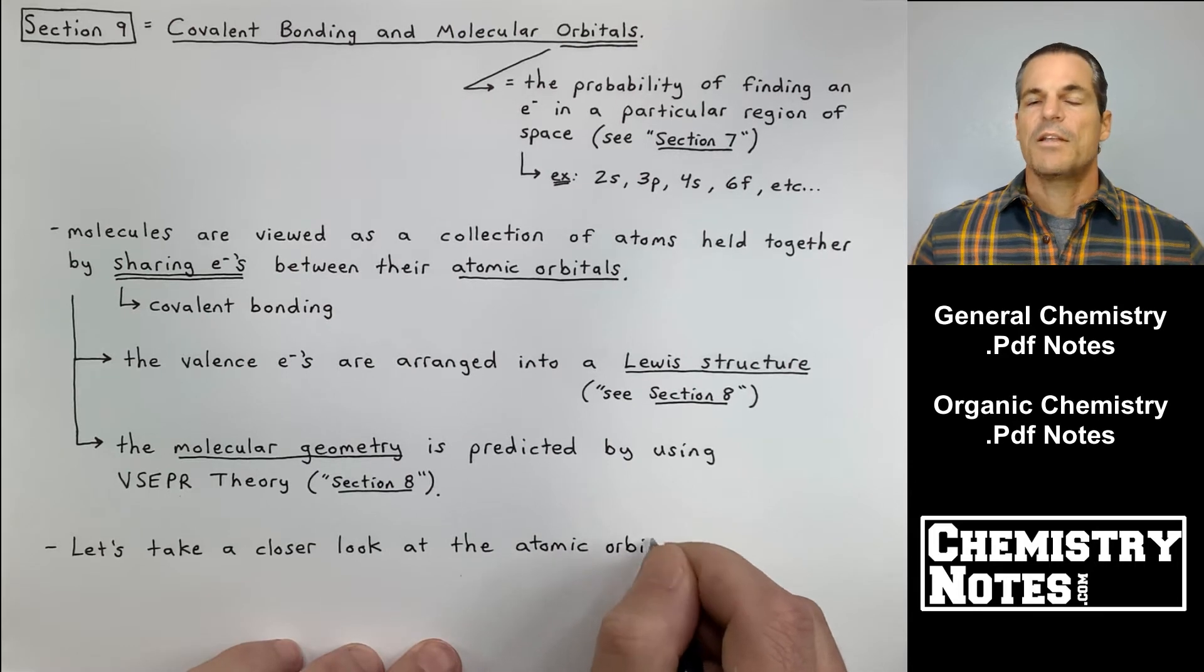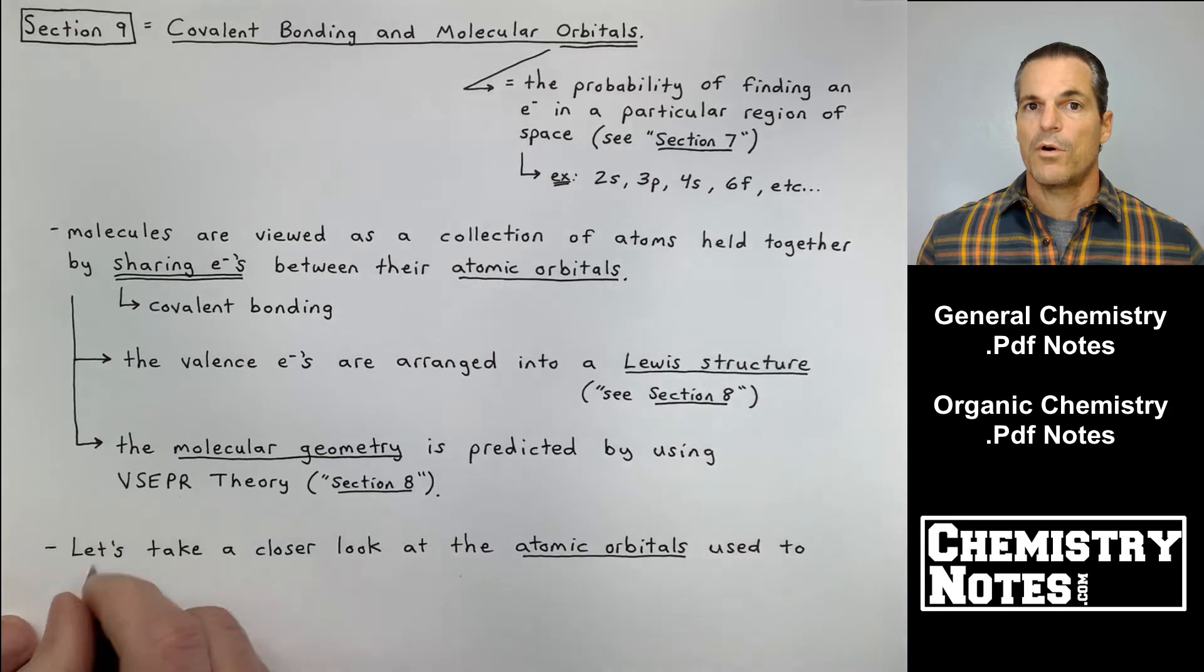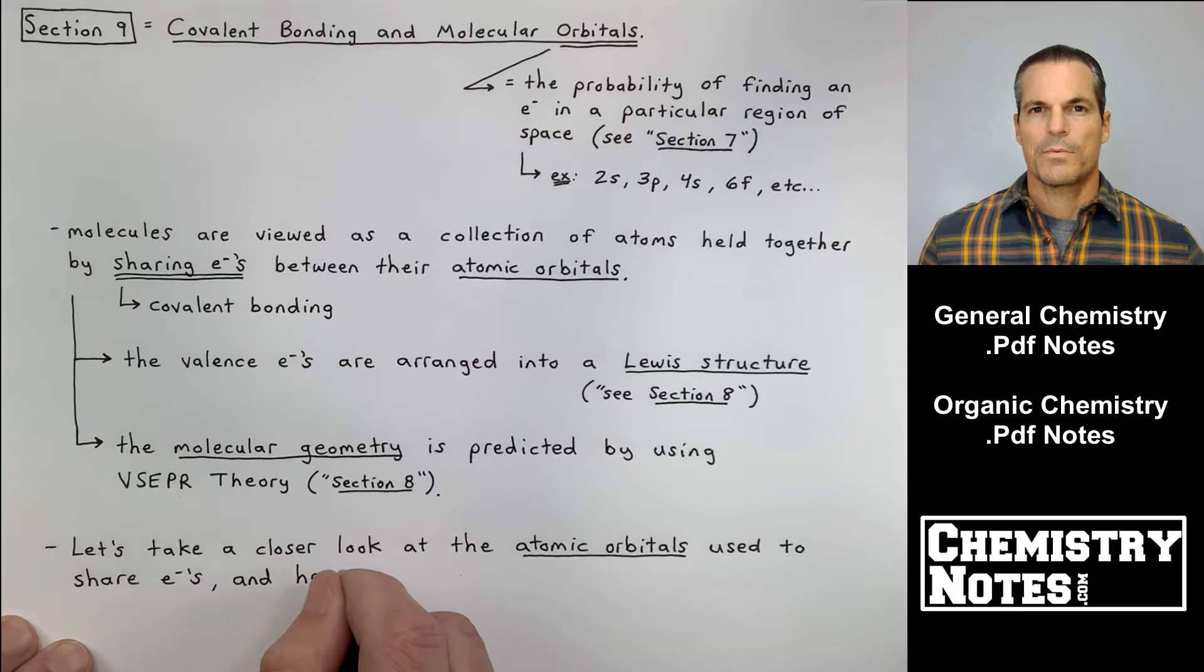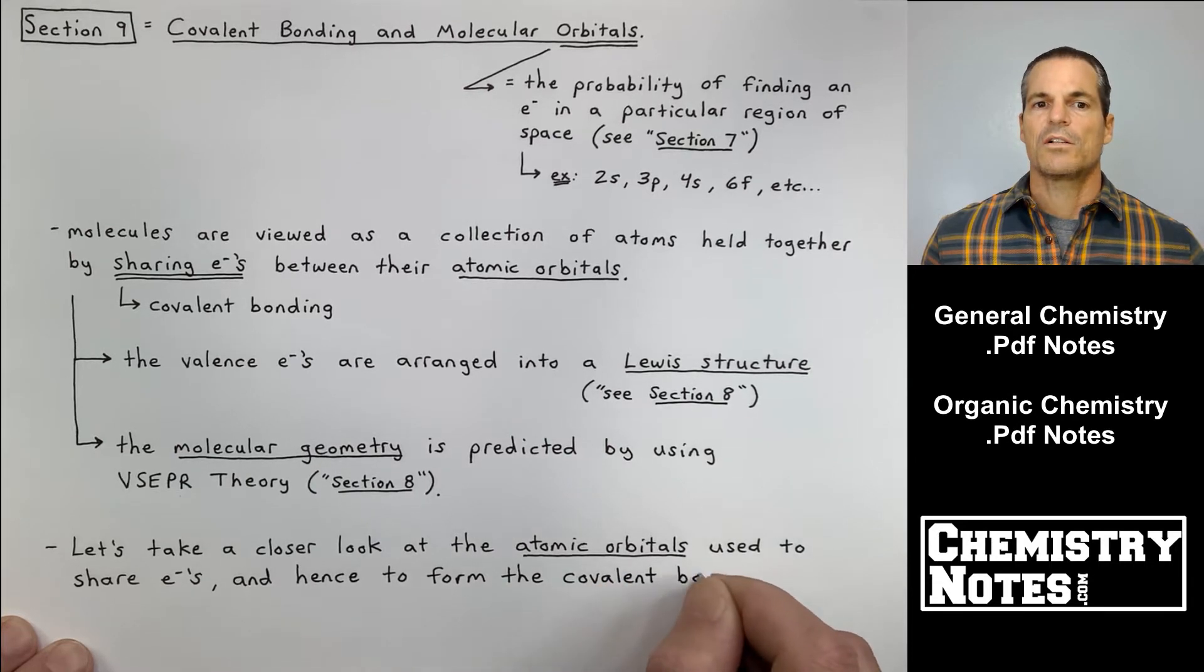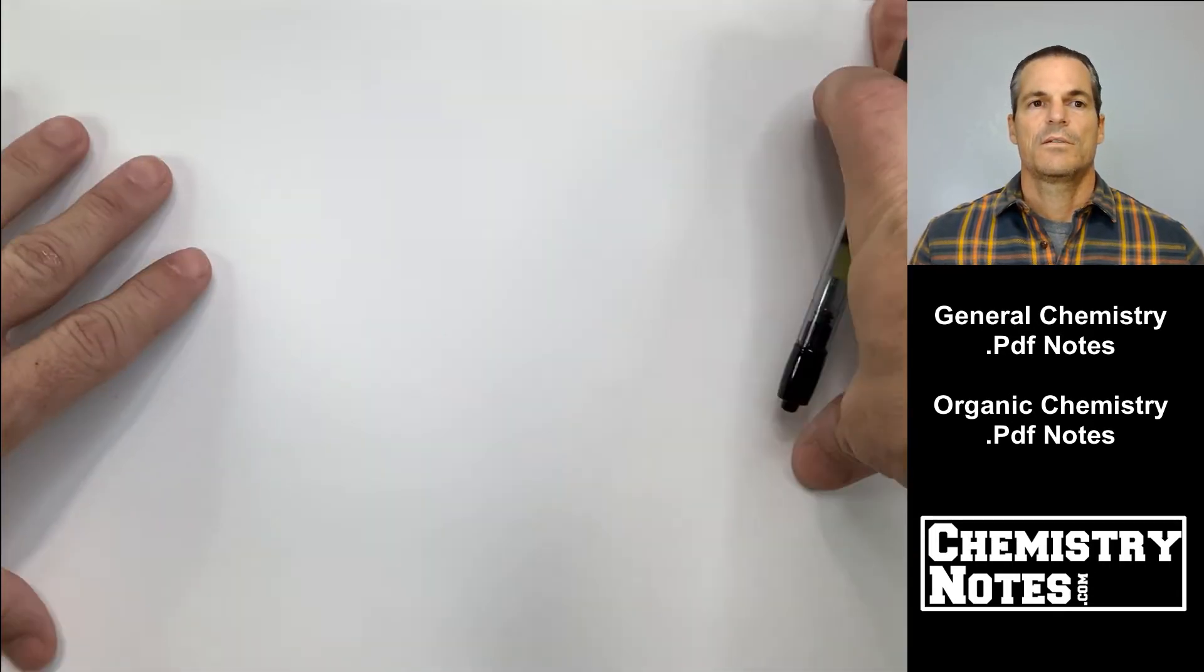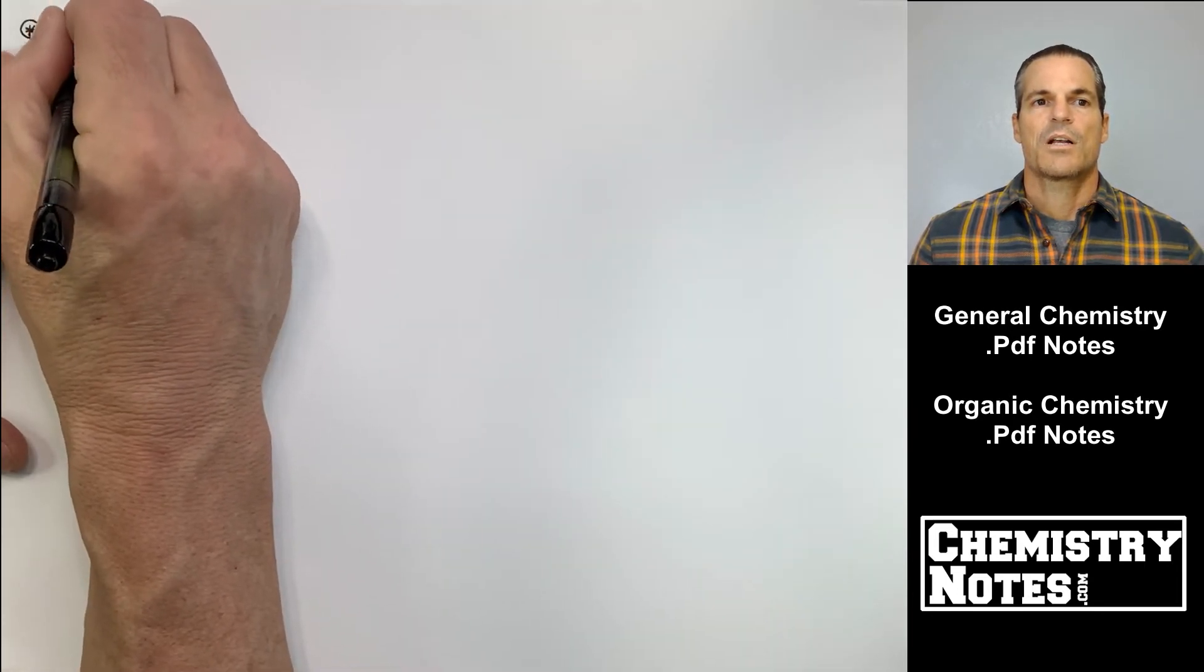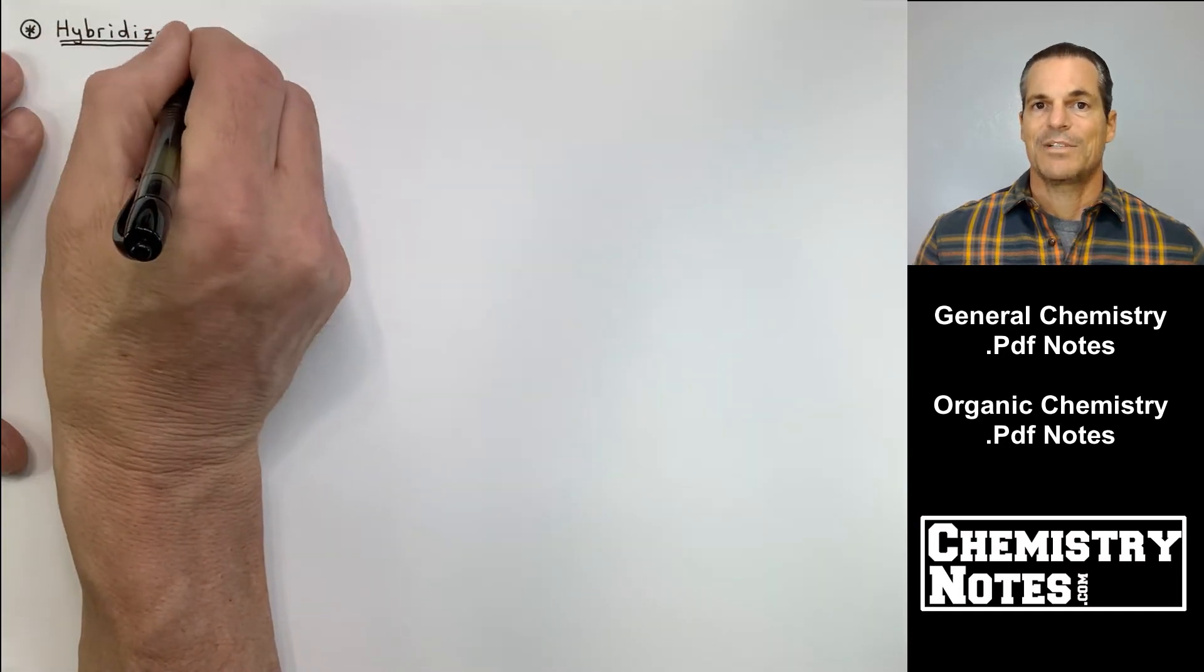I mentioned all that because I want to begin talking about how those particular bonds are formed in those Lewis structures. To do that, we have to take the atomic orbitals, or the valence orbitals, and manipulate them into something called hybrid orbitals. Let's take a closer look at the atomic orbitals used to share electrons and hence to make covalent bonds. At the top of page two, I'm going to talk about our first major topic of section nine, and that is hybridization.